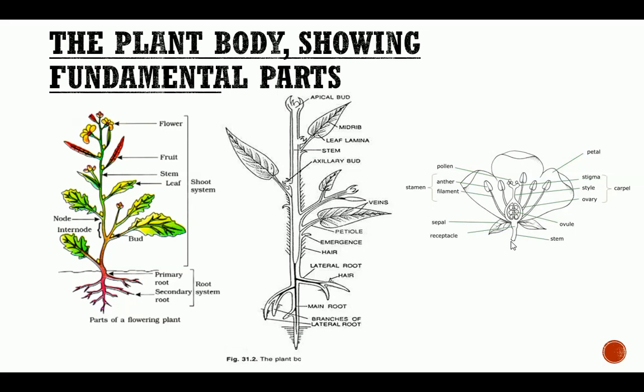So basically this is a plant body showing the fundamental parts. We've looked at the exterior parts of the plant — more like a crop morphological study. We've looked at what a typical angiosperm plant contains. As a student, when you see a plant outside, you should now be able to point out what these parts are.